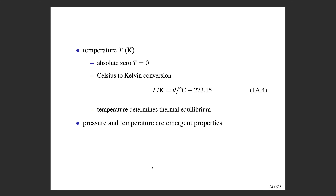Temperature is measured in units of Kelvin in the SI system and is related to thermal equilibrium, which was covered in the prologue video. When talking about absolute zero of temperature, you use T equals zero — you don't need to report T equals zero Kelvin.